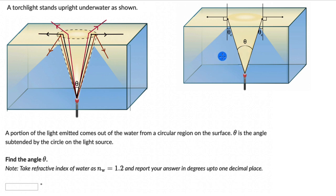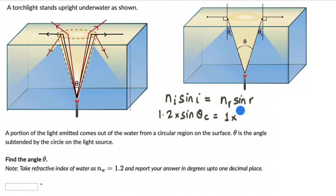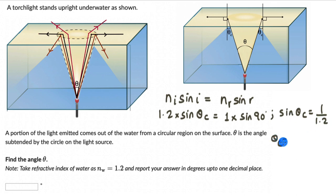Let's figure out the critical angle using Snell's law: the refractive index of the incident medium times sine of the incident angle equals the refractive index of the refractive medium times sine of the angle of refraction. The incident medium is water (n = 1.2) and the refractive medium is air. So 1.2 × sin(θc) = 1 × sin(90°) = 1. Therefore sin(θc) = 1/1.2, and θc = sin⁻¹(1/1.2) = 56.4 degrees.